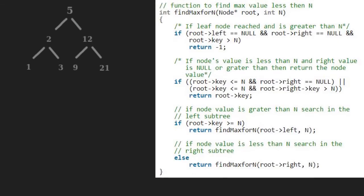Let us take N as 4. So, we pass 5, which is the root, and 4 to N in the findMaxForN function. We check if root is a leaf node. As it is false, we check if the node's value is less than N and the right value is null or greater than N, then return the node value.